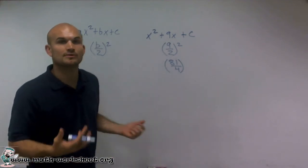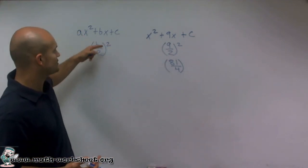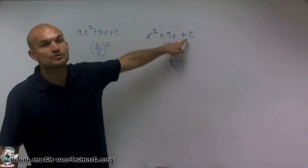So that's just going to help us be able to complete the square. In this problem, you just take your b divided by 2, square it, and that is going to be your c.